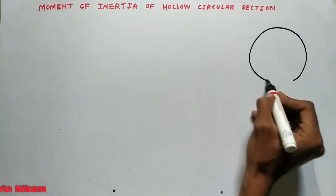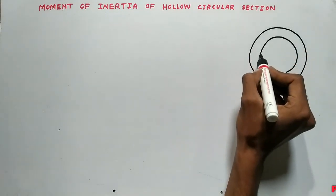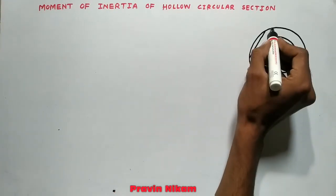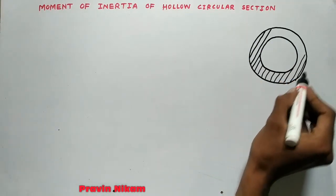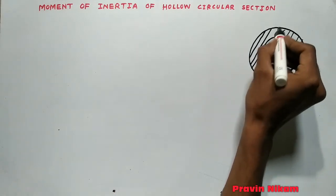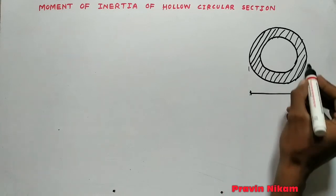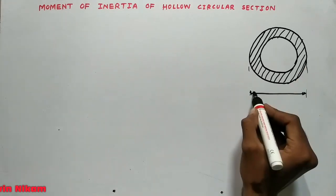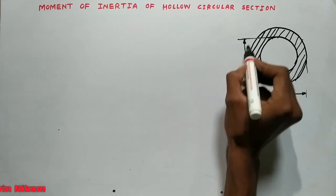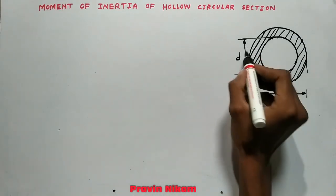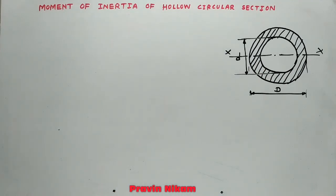So this is the outer circle, this is the inner circle, and this is the cut section — this is a hollow circular section. It has an outer diameter as capital D and inner diameter as small d.